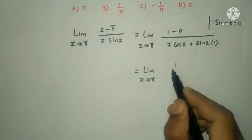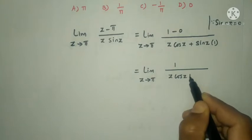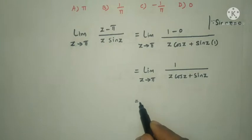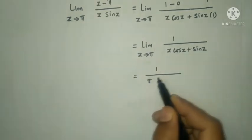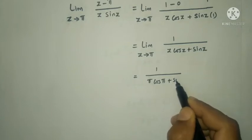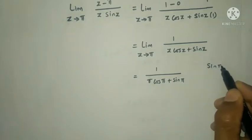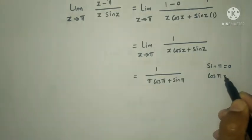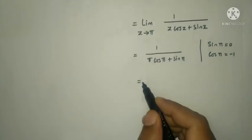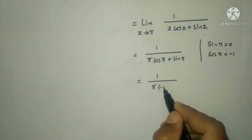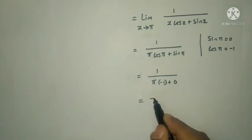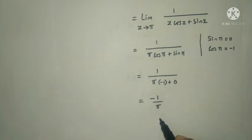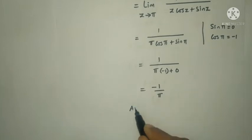Applying L'Hospital's rule, differentiate numerator and denominator. Numerator derivative is 1. Denominator derivative of z·sin z is z·cos z plus sin z. So the limit becomes limit z tends to π of 1 divided by (z·cos z plus sin z). Substituting z = π: cos π = minus 1, sin π = 0. That gives 1 divided by (π times minus 1 plus 0) = minus 1/π. The answer is Option C.